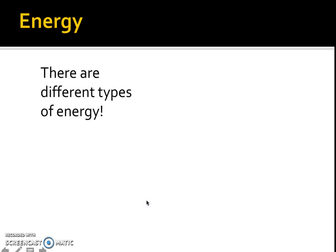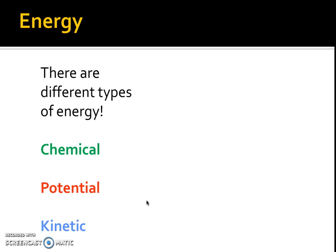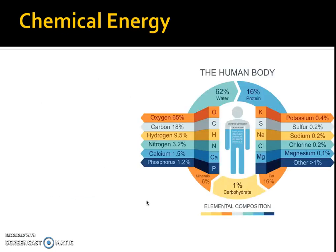We have different types of energy and the ones that we need to focus on for A-level PE are chemical energy, potential energy, and also kinetic energy.